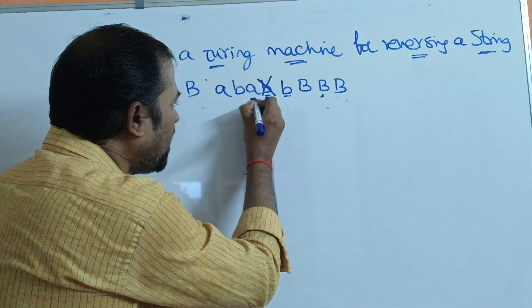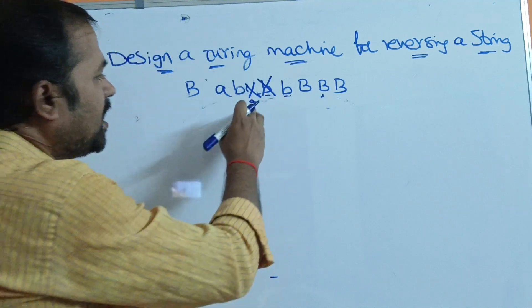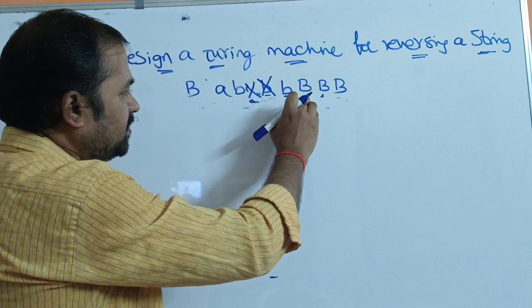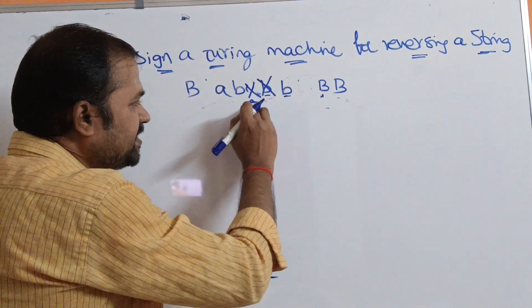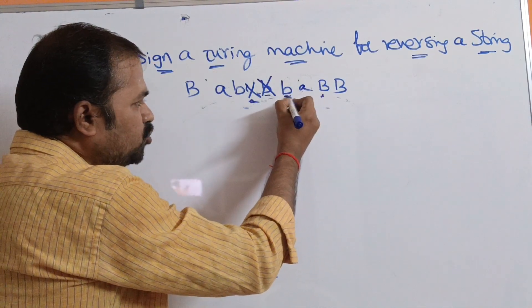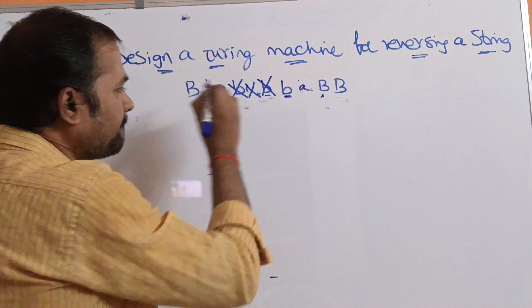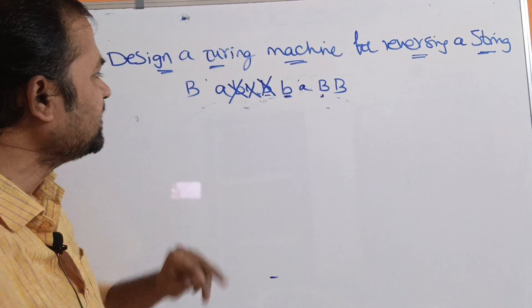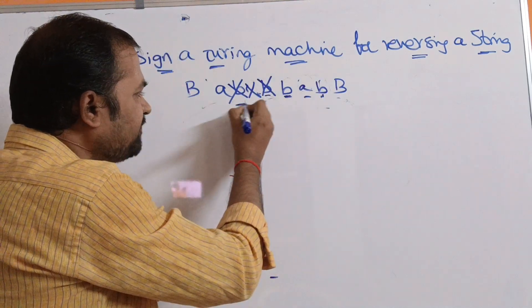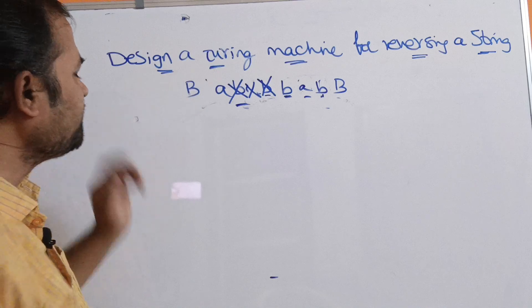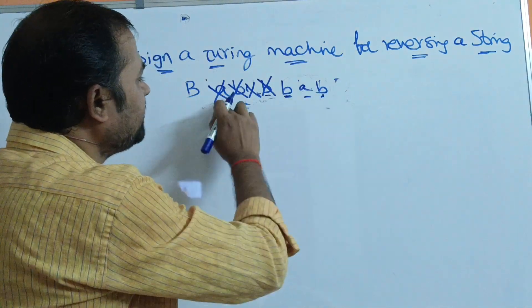After X, we have small a. We need to replace this small a by X. Move the head towards the right till we get the blank symbol. After B, we have blank symbol — till we get the blank symbol. In place of the blank symbol, we replace with A. Then move towards the left till we get X. After X, we have small b, so replace this B by X, then move the head towards the right till we get the blank symbol. Replace this blank symbol — here we have B — and move the head towards the left till we get X. After X, we have A, so replace this A by X and move the head towards the right till we get the blank symbol. Replace the blank symbol by A.